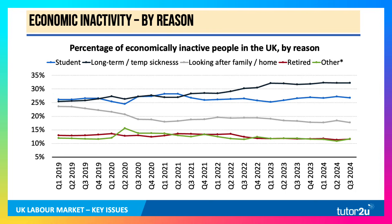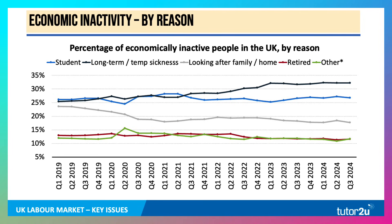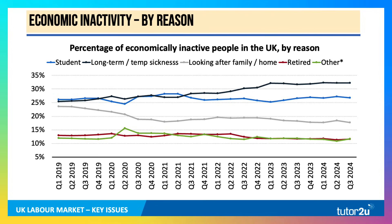Here's the chart showing the reasons why people are inactive: from being full-time students, long-term sickness — some of which is linked to long COVID — looking after family at home including elderly relatives, people who have retired, and other factors. There has been an increase in the rate of long-term sickness as a factor. It's now the dominant cause.